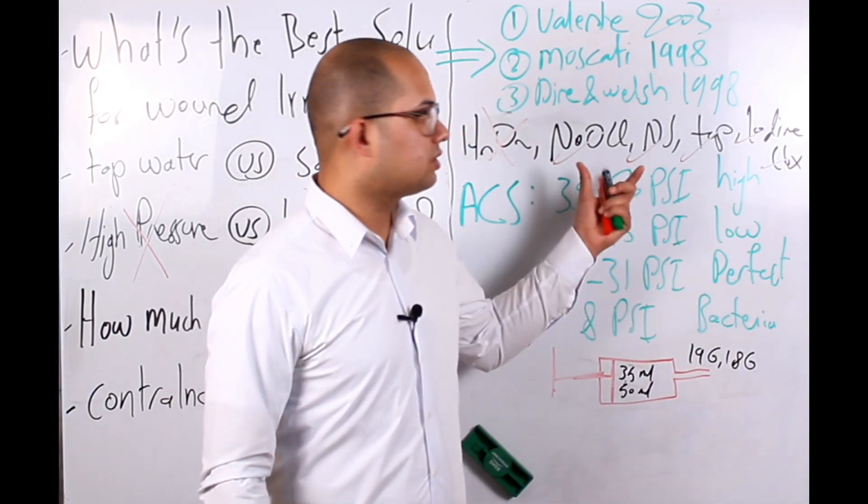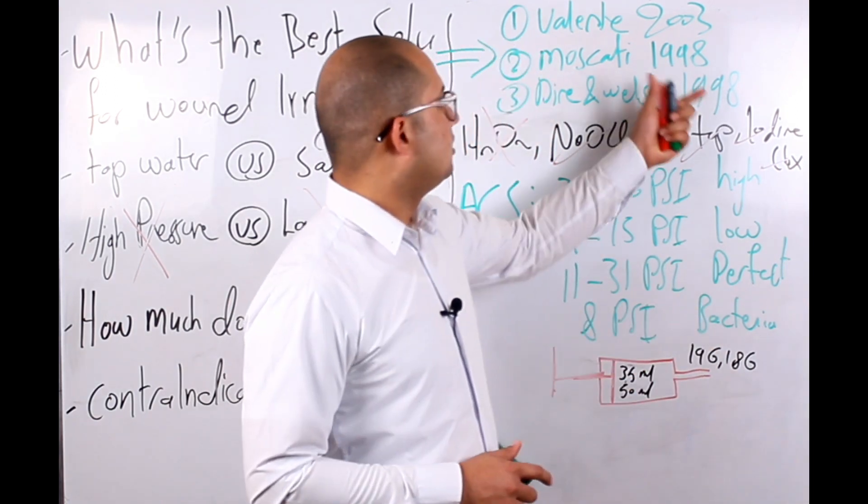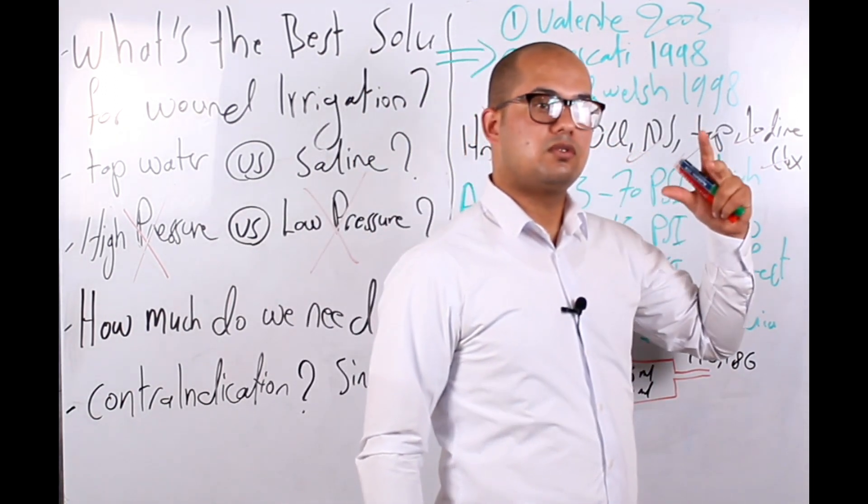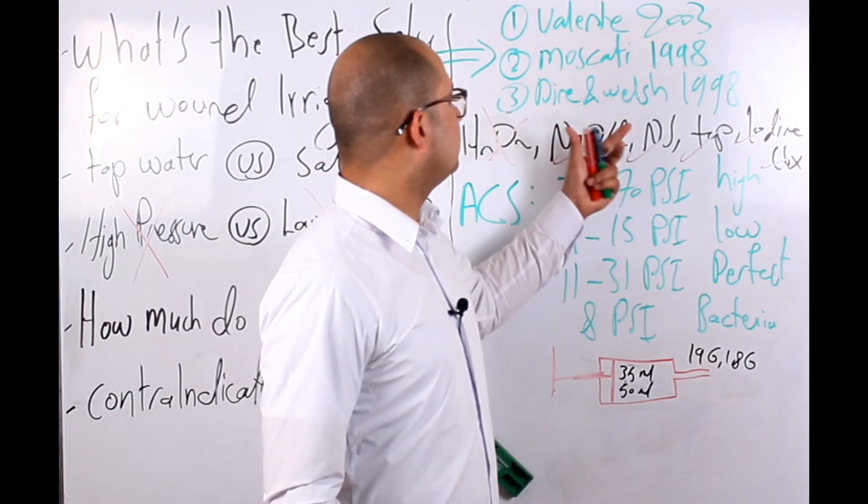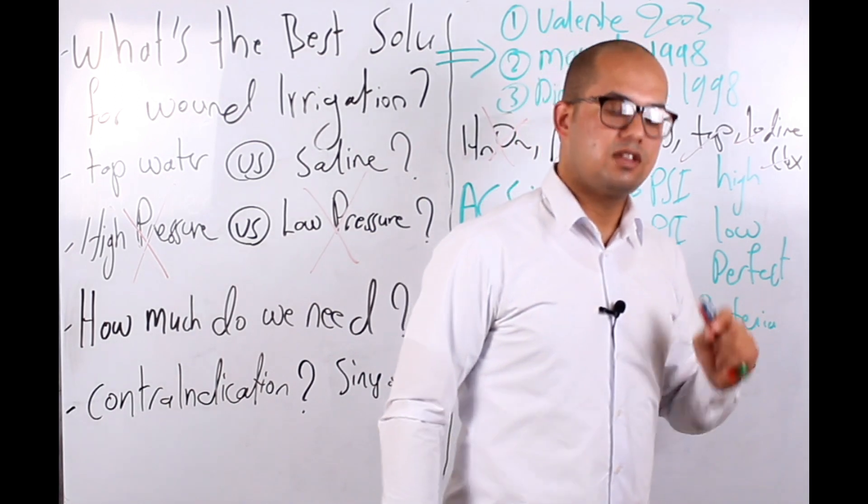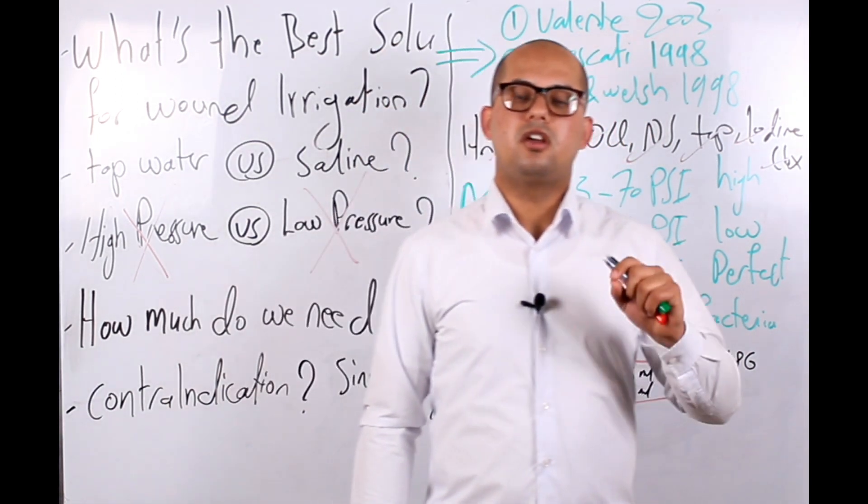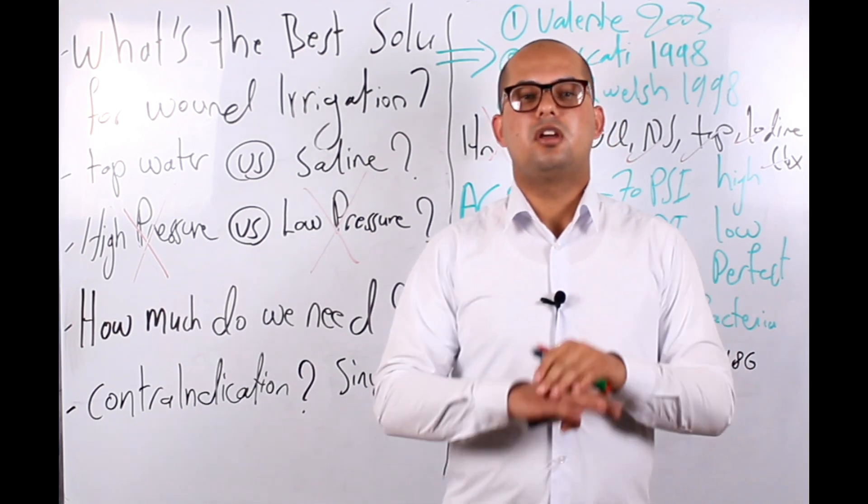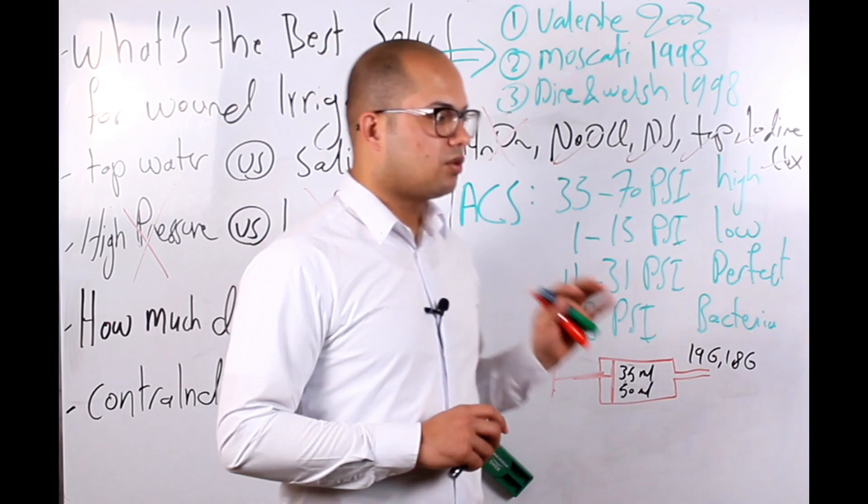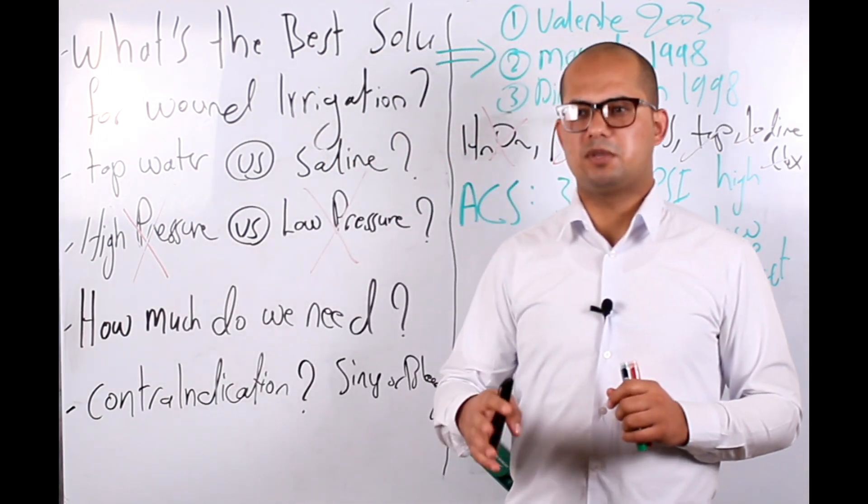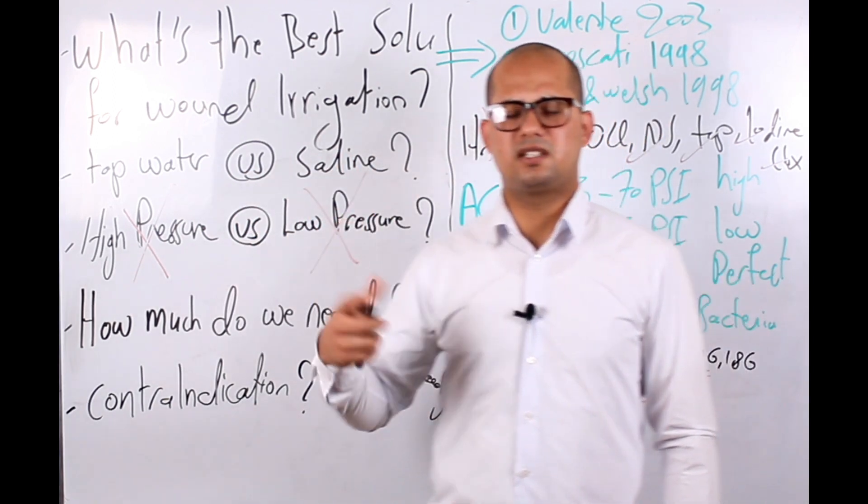But in 1998, in two systematic reviews, Dire and Welsh and Moscati, they did the systematic review and they confirmed that there is no difference on the infection rate of all irrigants. So that, use what you have. The cheapest and most available one is water. Use water, use normal saline, it does not matter.